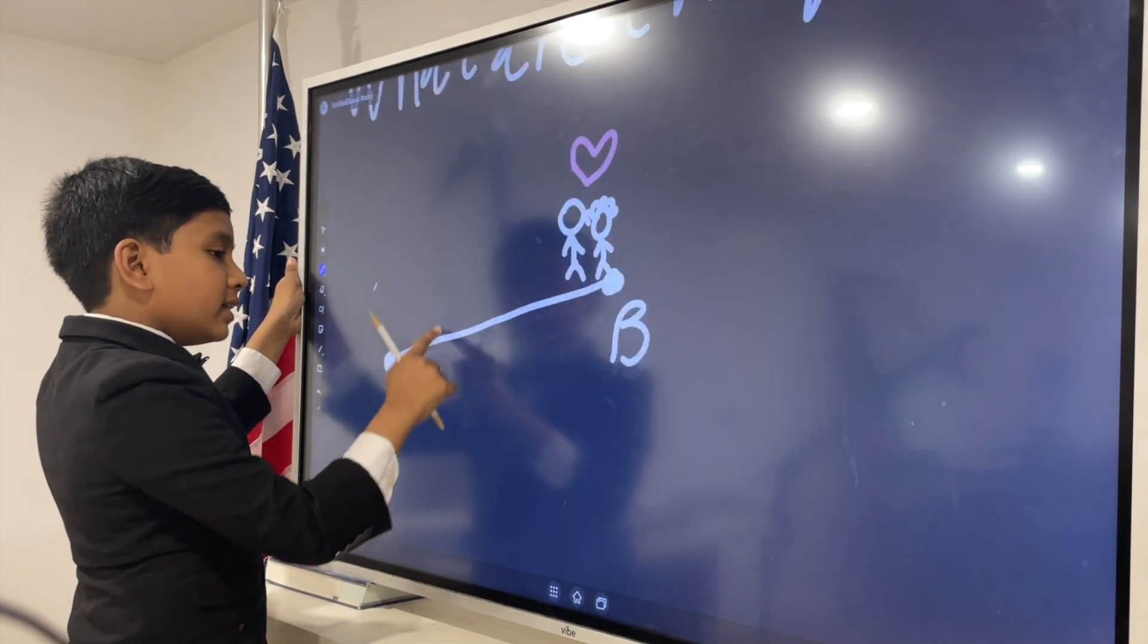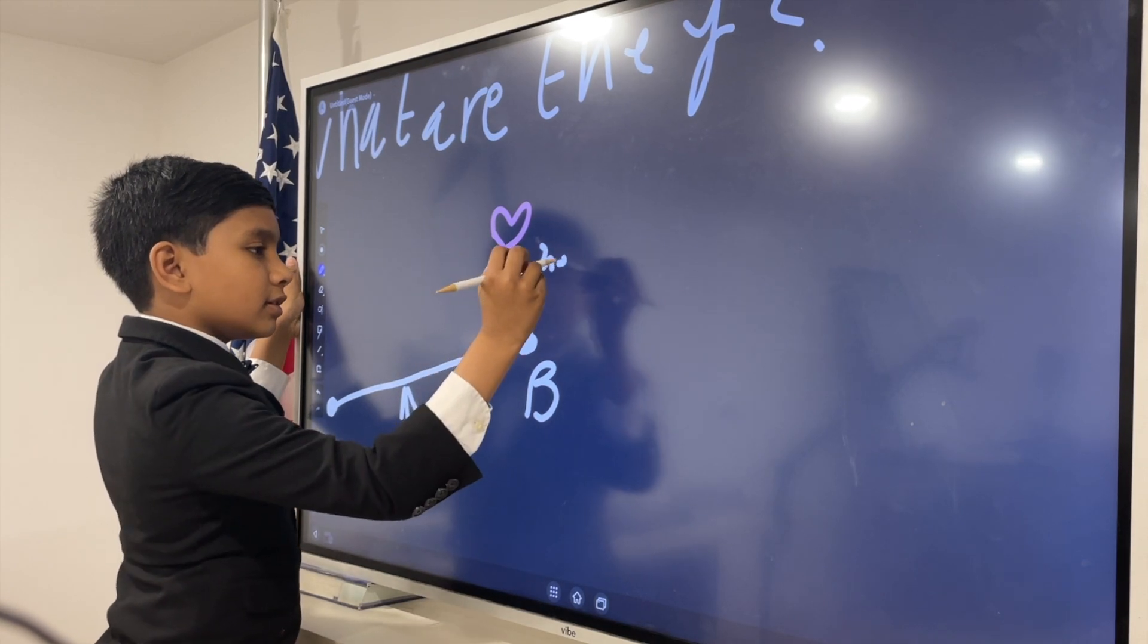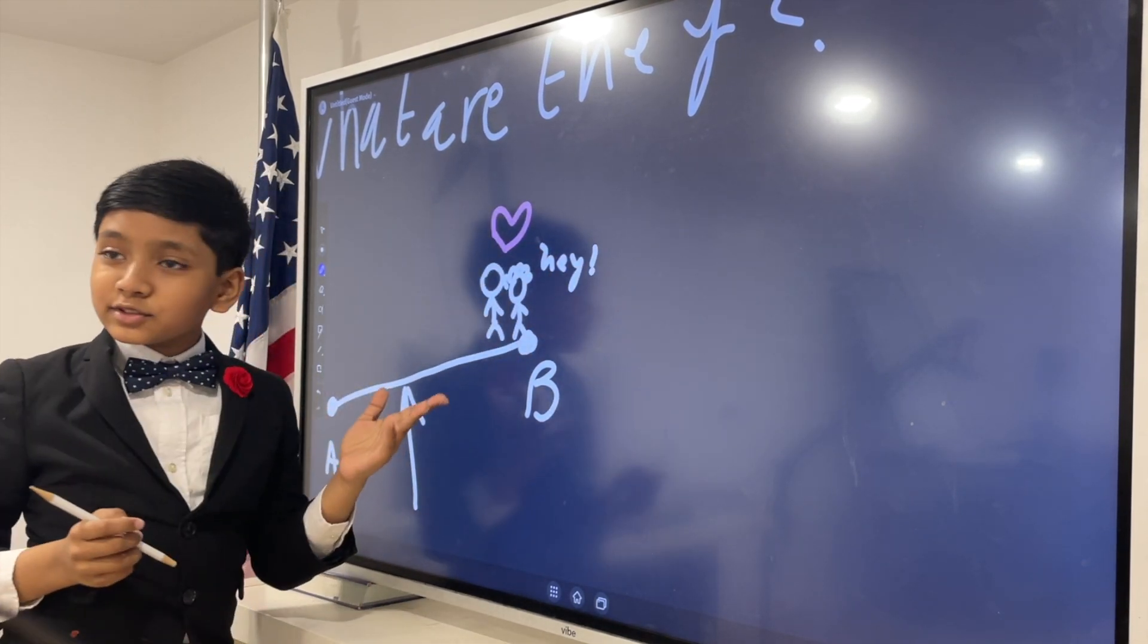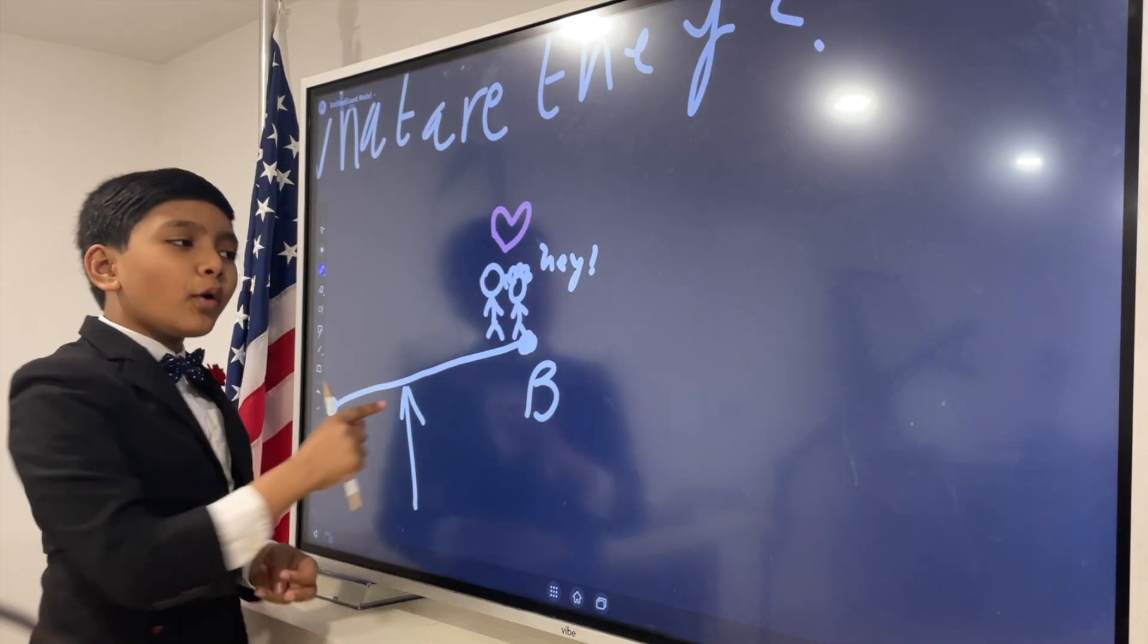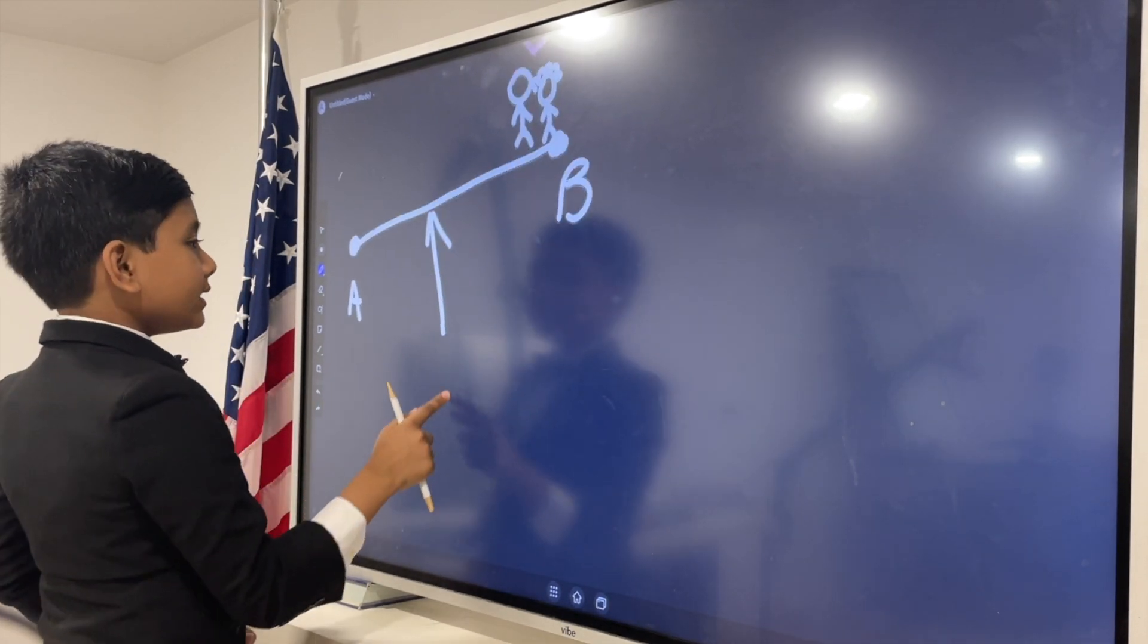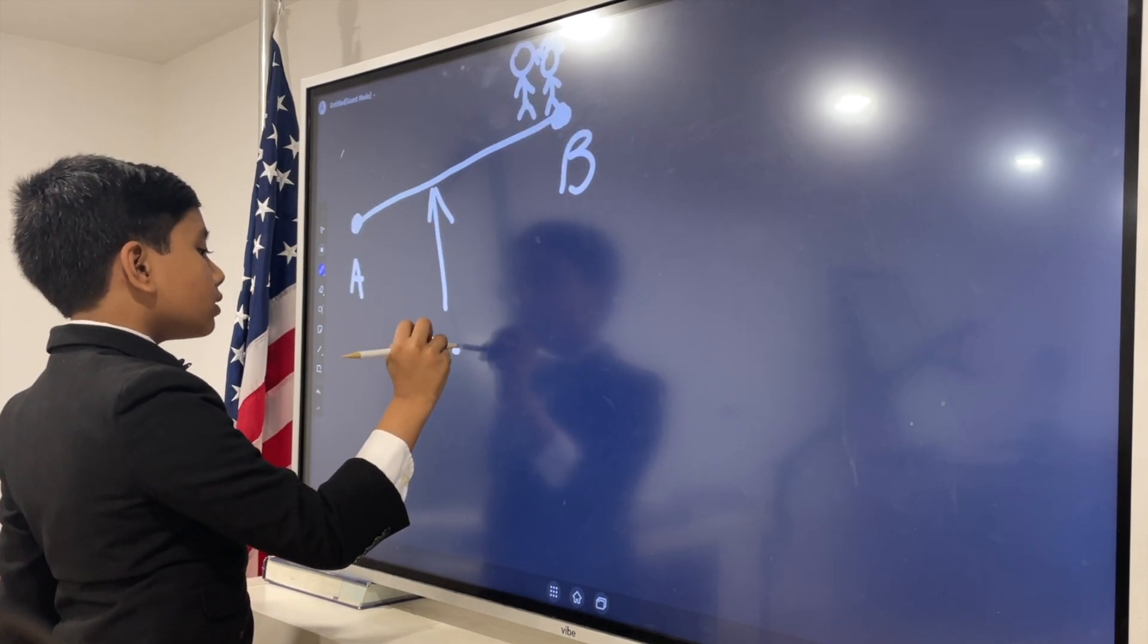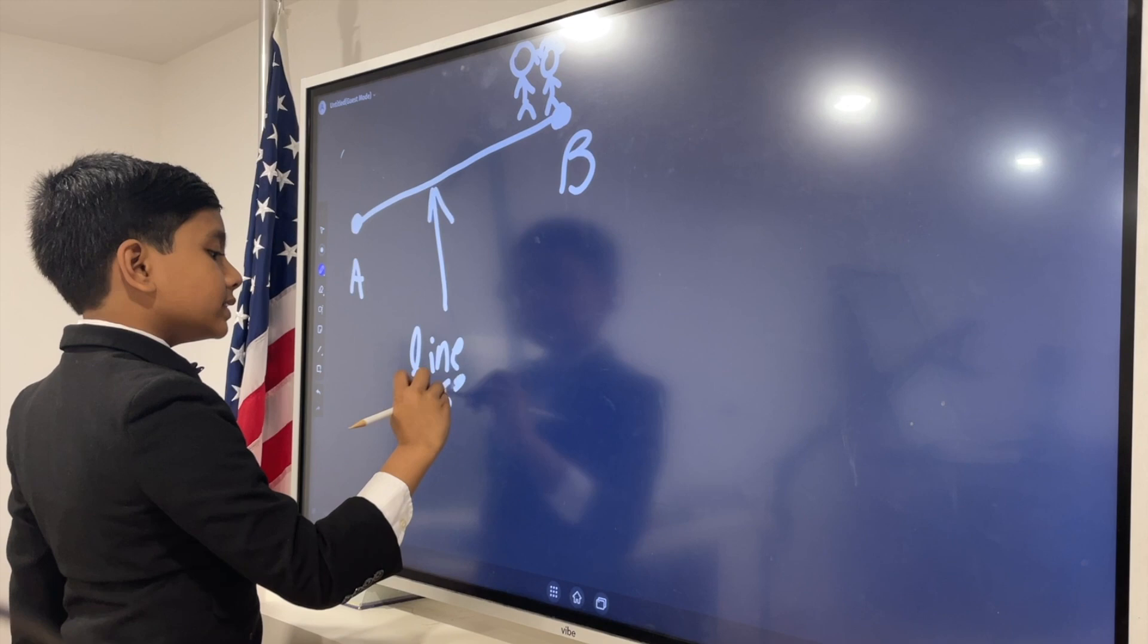But what's more important is the bridge itself. The friends are getting mad that I said the bridge is more important. Okay. So, this bridge is more commonly called a line segment.